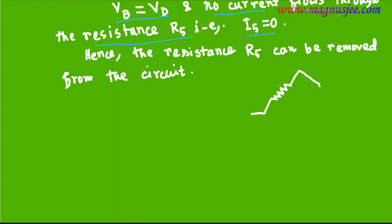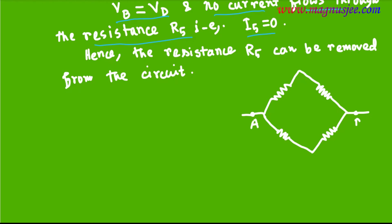After the removal of the middle resistance R5, the circuit diagram will contain only four resistances, because R5 becomes ineffective. Between A and C, there will be only the four resistances R1, R2, R3, and R4, as shown in the modified circuit.